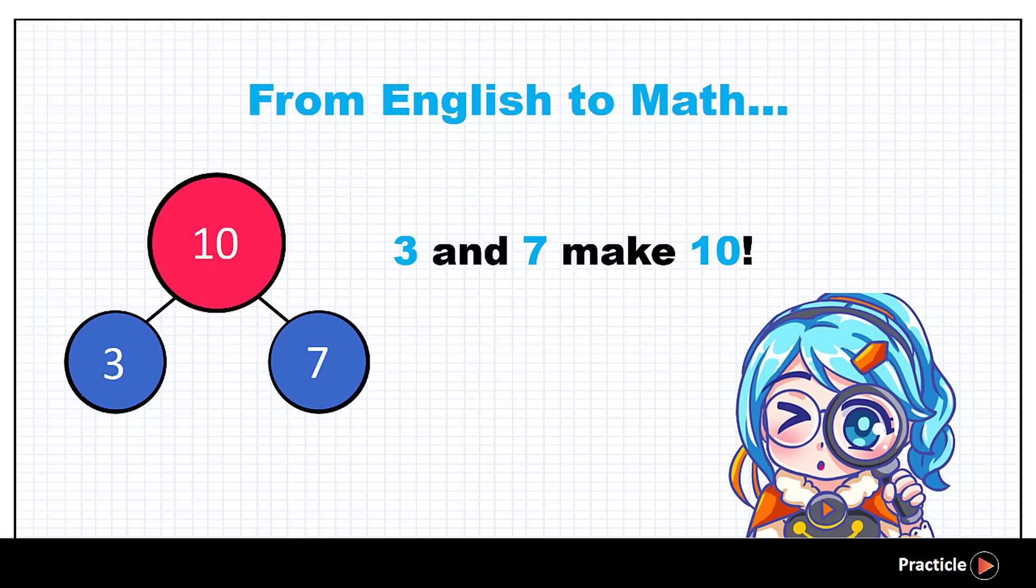Well, 3 and 7 make 10. Let's keep the numbers, and change the words into something that we use in math to stand for the same idea. Alright? So we'll keep the number 3, 7, and 10. When we see the word and in English, it usually means to put some things together. Correct? And we are going to use the plus sign to add the number 3 and 7.